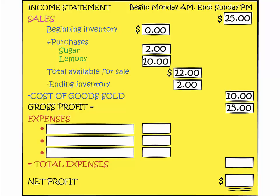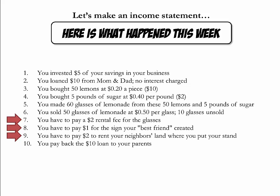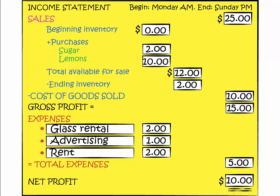We can now calculate our gross profit, which is sales minus COGS, or $25 minus $10, giving us $15 in gross profit. The next expenses incurred were: $2 to rent your parents' glasses, $1 to pay for advertising, and $2 to rent your neighbor's land for your stand. Since these expenses affect earnings, they belong on the income statement. We can now also calculate our net profit, which equals gross profit minus expenses, or $15 minus $5, which is $10 in net profit.